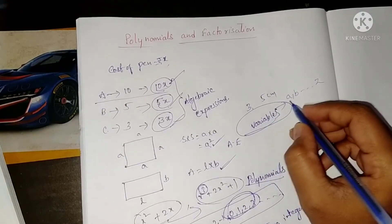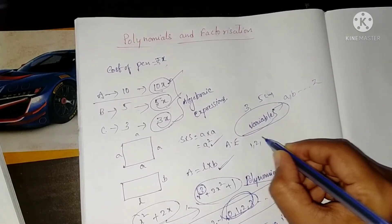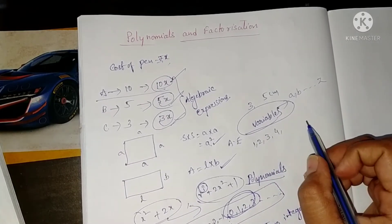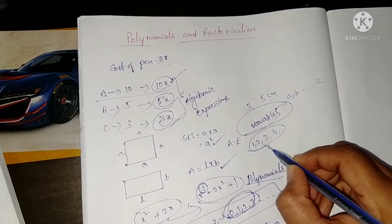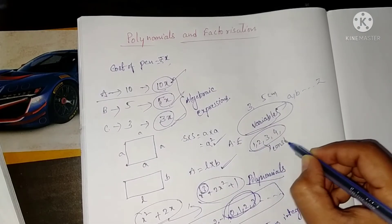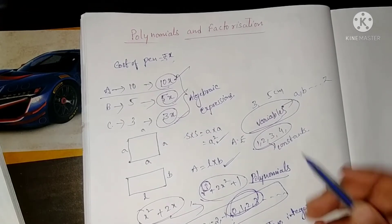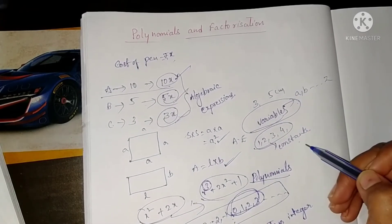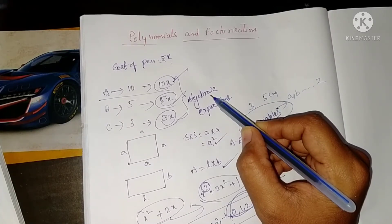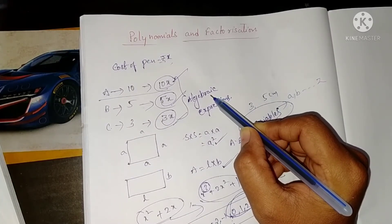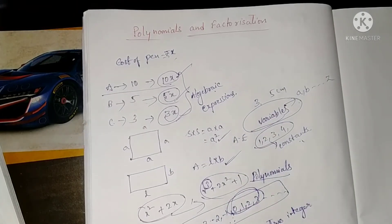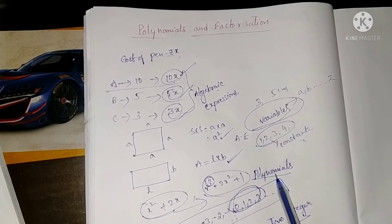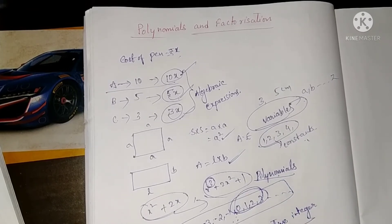All variables like a, b, x, y, z are denoted with letters. Numbers whose values do not change are called constants. The combination of variables and constants is called an algebraic expression, and algebraic expressions in which variables have non-negative integer powers are called polynomials.